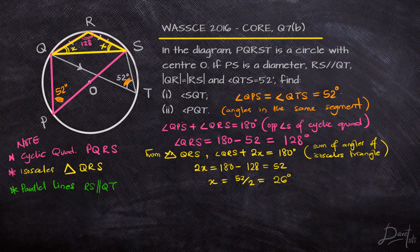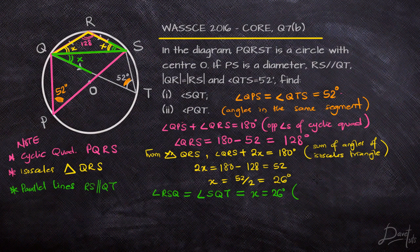Now, since RS is parallel to QT and line QS runs across both parallel lines as a transversal, angle SQT and angle RSQ are alternate angles. Therefore angle SQT = 26°.